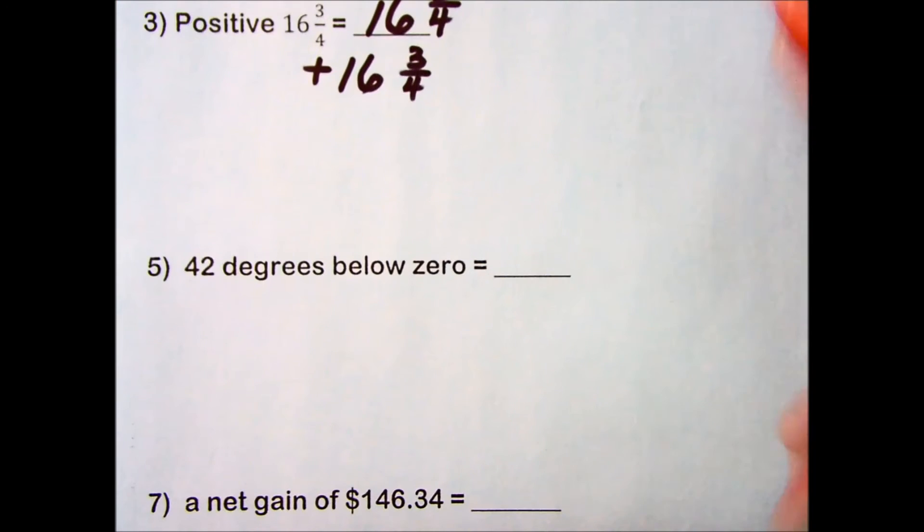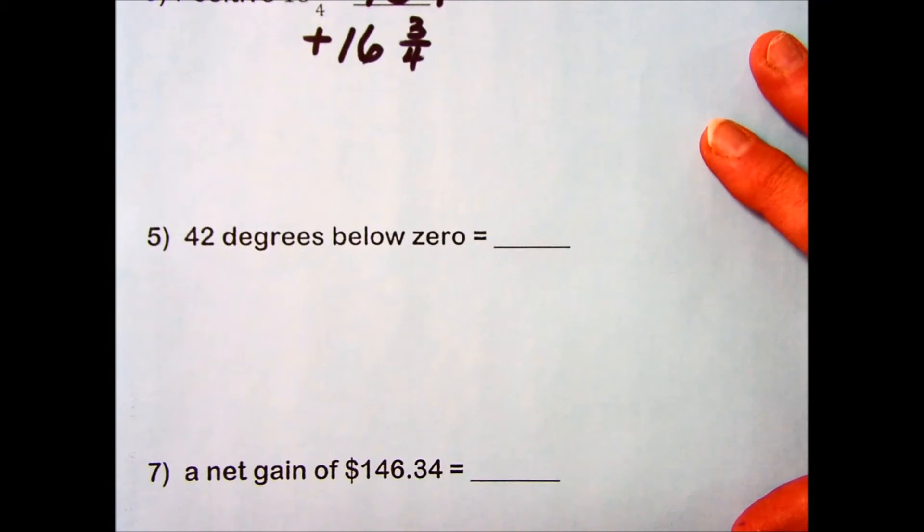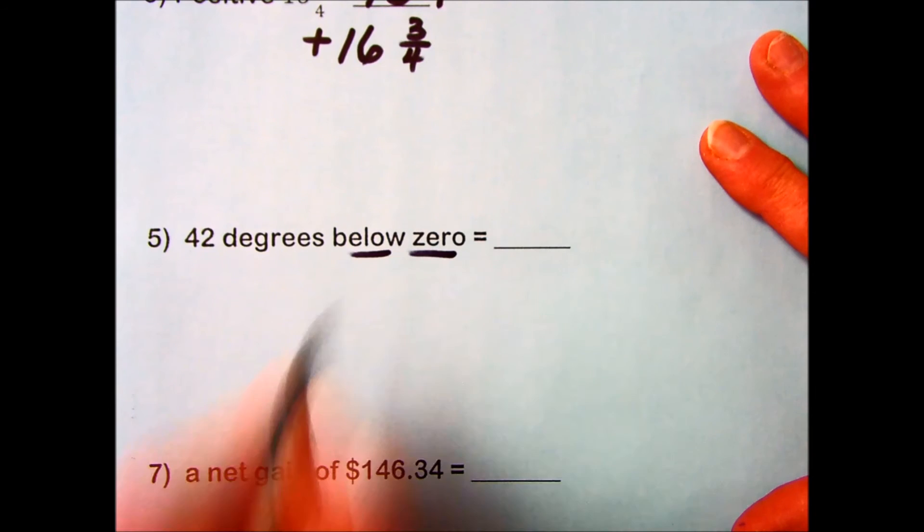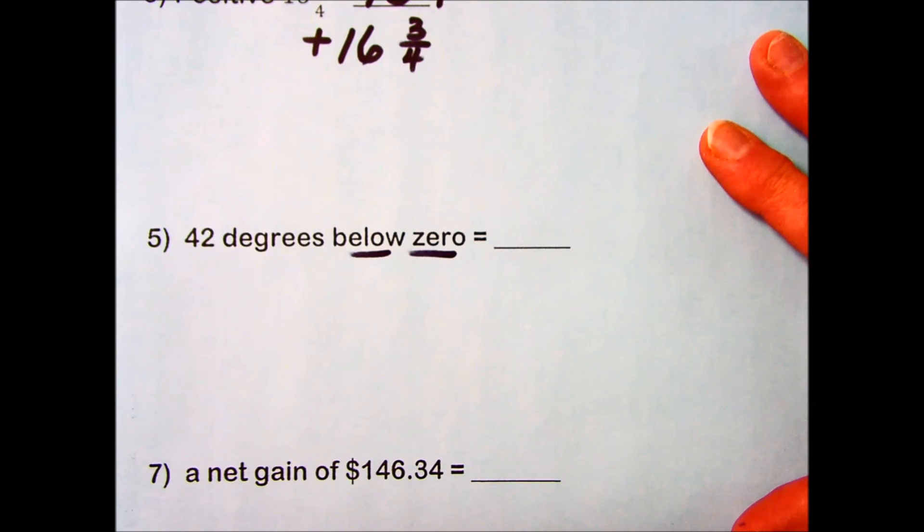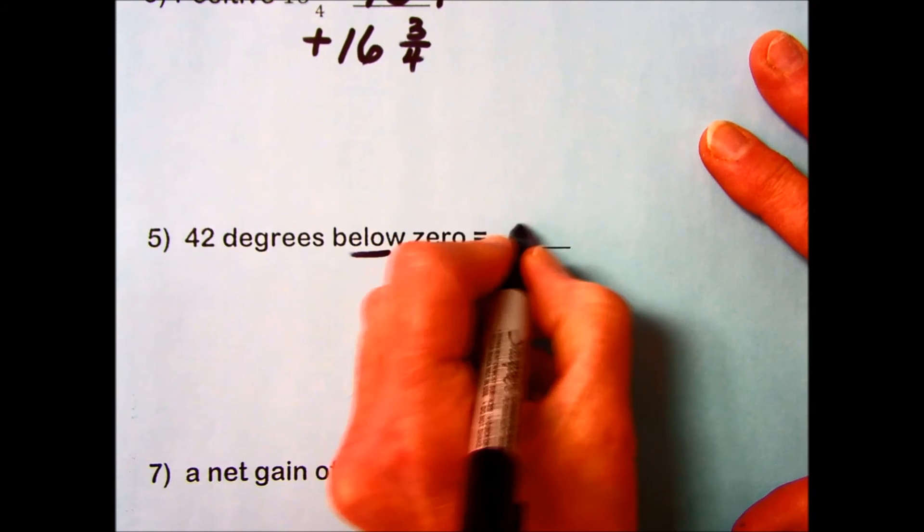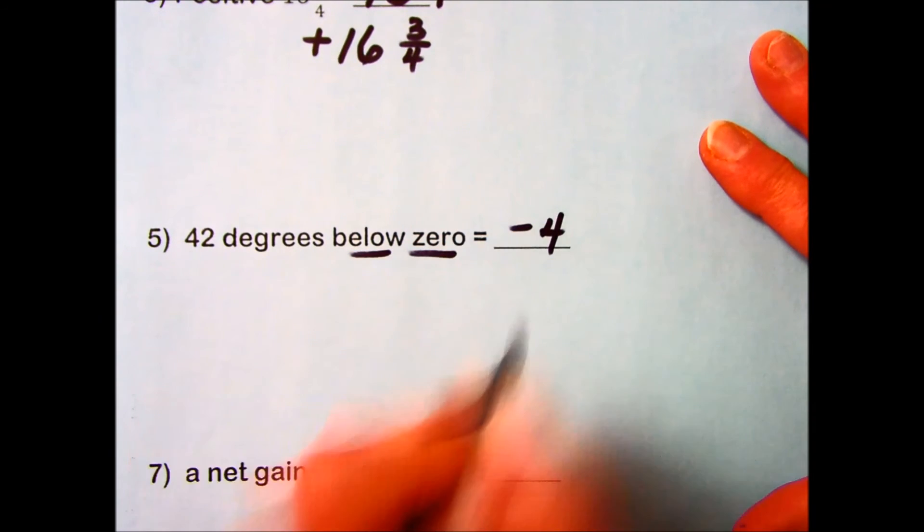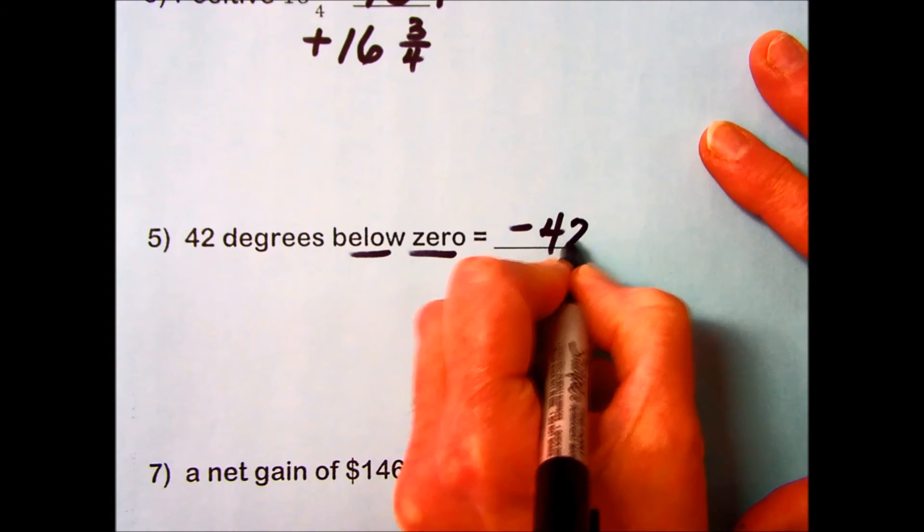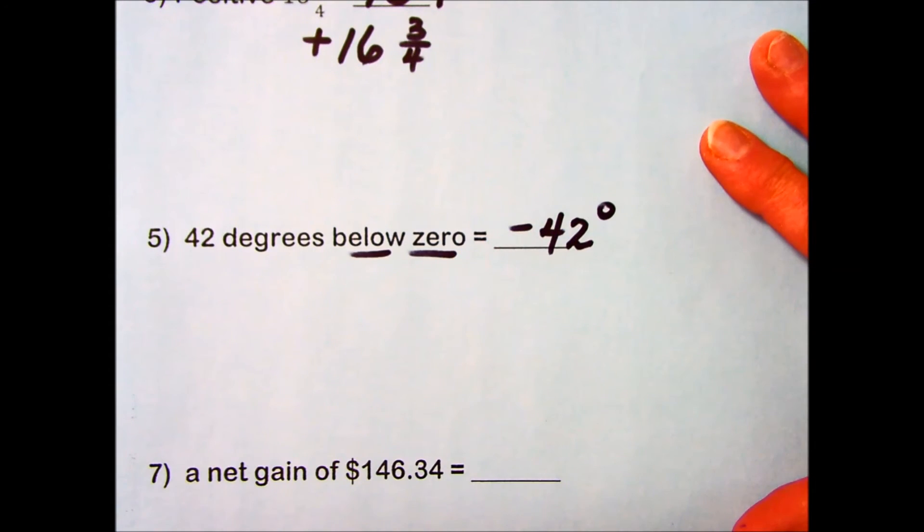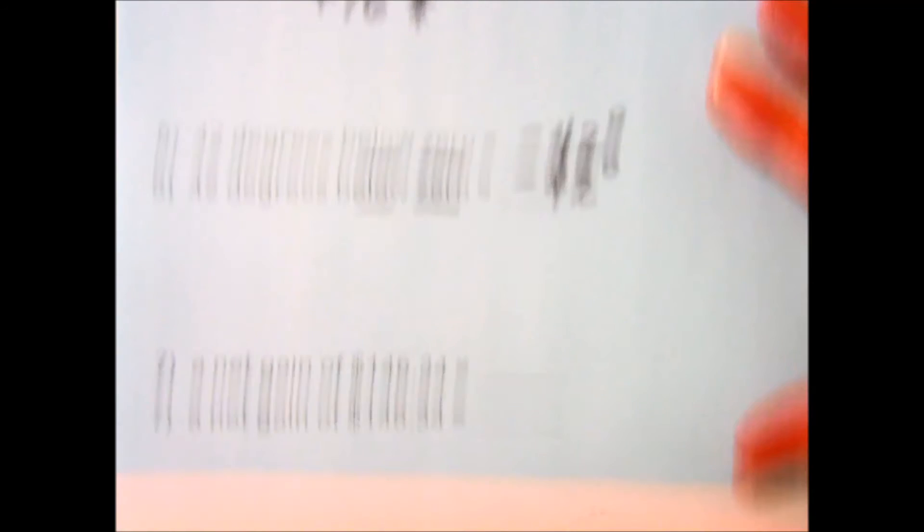Some application problems are on number 5 and number 7. The first one here: 42 degrees below zero. 'Below zero' is my key to the fact that this is a negative number. Because it's a negative number to the left of zero on the number line, I'm going to put negative 42 degrees.